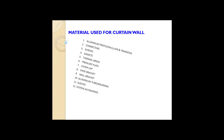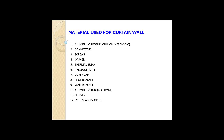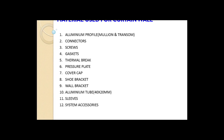The materials used for curtain wall include: aluminum profiles — mullion, transom, connectors, screws, gasket, thermal brake, pressure plate, cover cap, shoe bracket, wall bracket, aluminum tube, sleeves, and system accessories.